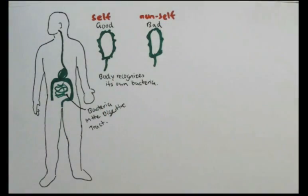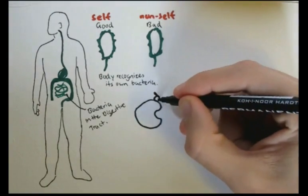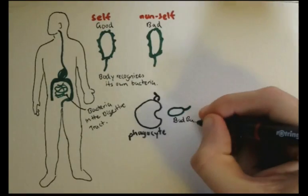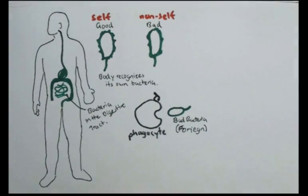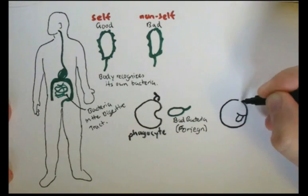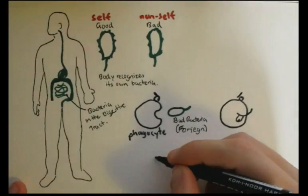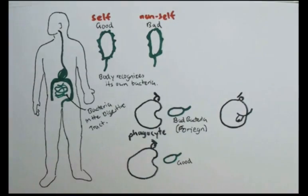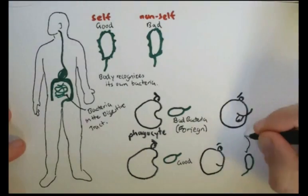For example, if we have one of those immune cells which we discussed, such as a phagocyte, and it comes along a non-self bacteria or pathogen, a bad pathogen, it will consume it and eliminate it without hesitation. However, if a phagocyte comes along a self-bacteria, its own, it can distinguish it from a foreign bacteria, and so let it pass without harm.